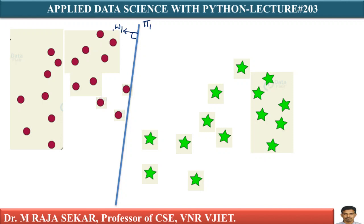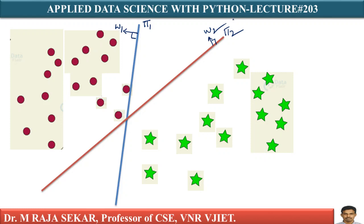Similarly, there is another hyperplane π2 with its own normal, which also separates the two sets of points. There is another hyperplane π3 that also separates both of them. There are many, many such hyperplanes — π1, π2, π3, π4, π5 — that separate your positive points from your negative points.